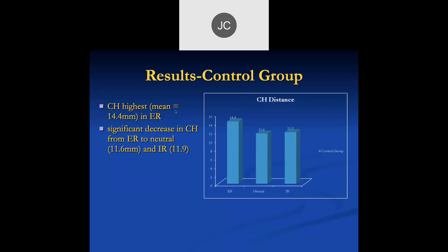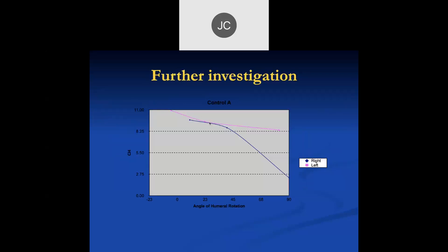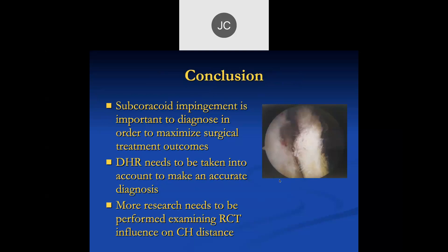Additional measurements were made at different degrees of rotation on one patient's left and right shoulders — the right was symptomatic and had the rotator cuff tear — showing a big change on the right with different rotation positions. Remember: subacromial and subcoracoid impingement does occur and is important; if you see extensive narrowing especially in a neutral to externally rotated shoulder, be concerned.